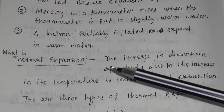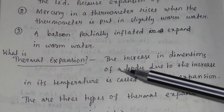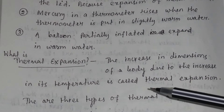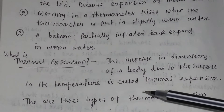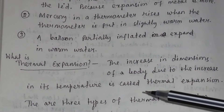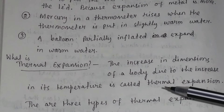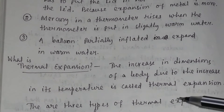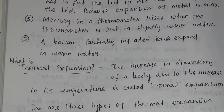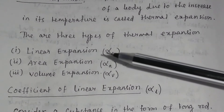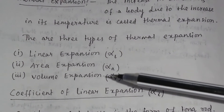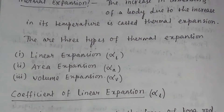So what is thermal expansion? The increase in dimension of a body due to the increase in its temperature is called thermal expansion. There are three types of thermal expansion: linear expansion, area expansion, and volume expansion.